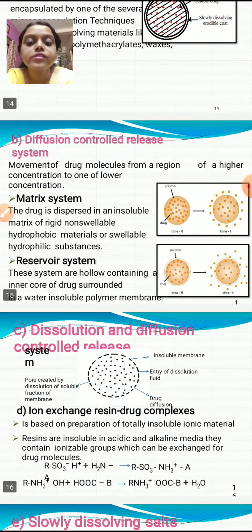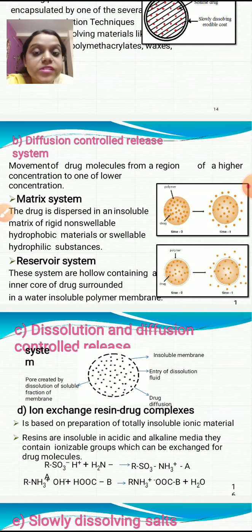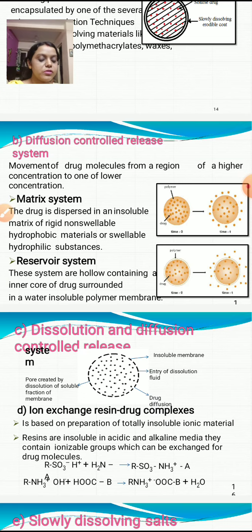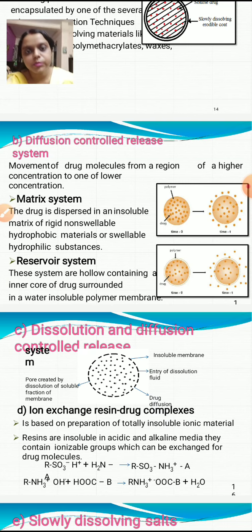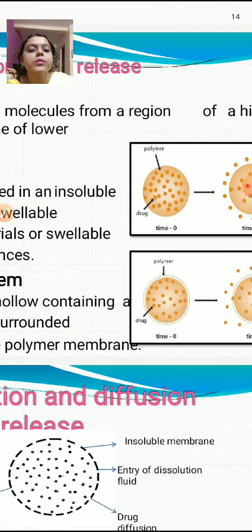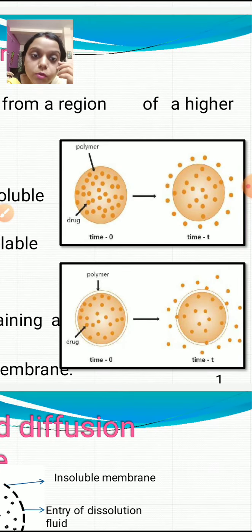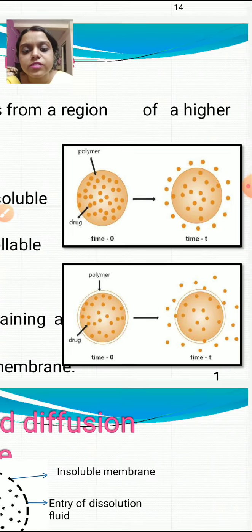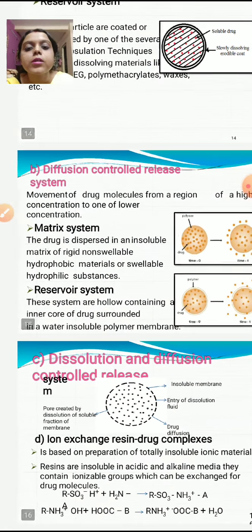In a diffusion controlled release system, drug molecules move from a region of higher concentration to one of lower concentration — similar to the principle of osmosis through a semipermeable membrane. The diagram shows what is happening at time 0 (initial phase) and at time t (final phase).